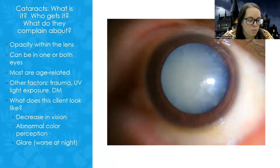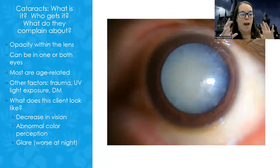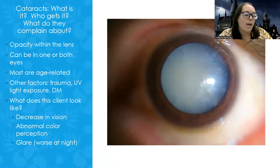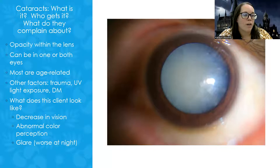Now let's get into cataracts. An abnormal finding in an eye assessment is a cloudy lens. Cataracts are an opacity — you can see a cloudiness to the lens. It can be in one eye or both. It's usually related to age, but other risk factors include trauma, too much exposure to sunlight, and diabetes.